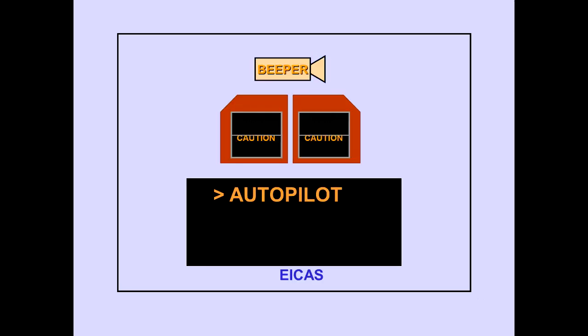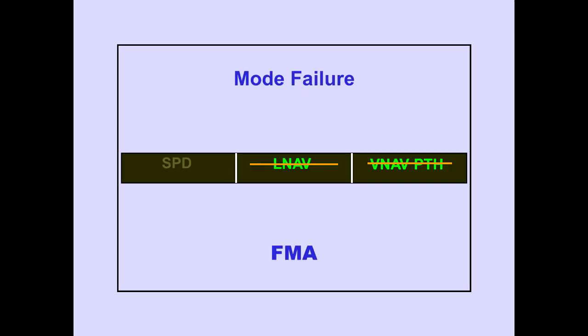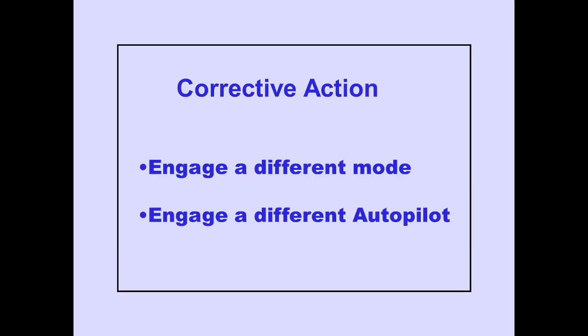The ICAS caution message, Autopilot, indicates the autopilot is still engaged and flying the airplane, but with degraded accuracy due to an autopilot or mode failure. AFDS mode failures are displayed on the flight mode enunciation with amber lines through the failed modes. The corrective action is to engage a different mode or engage a different autopilot.